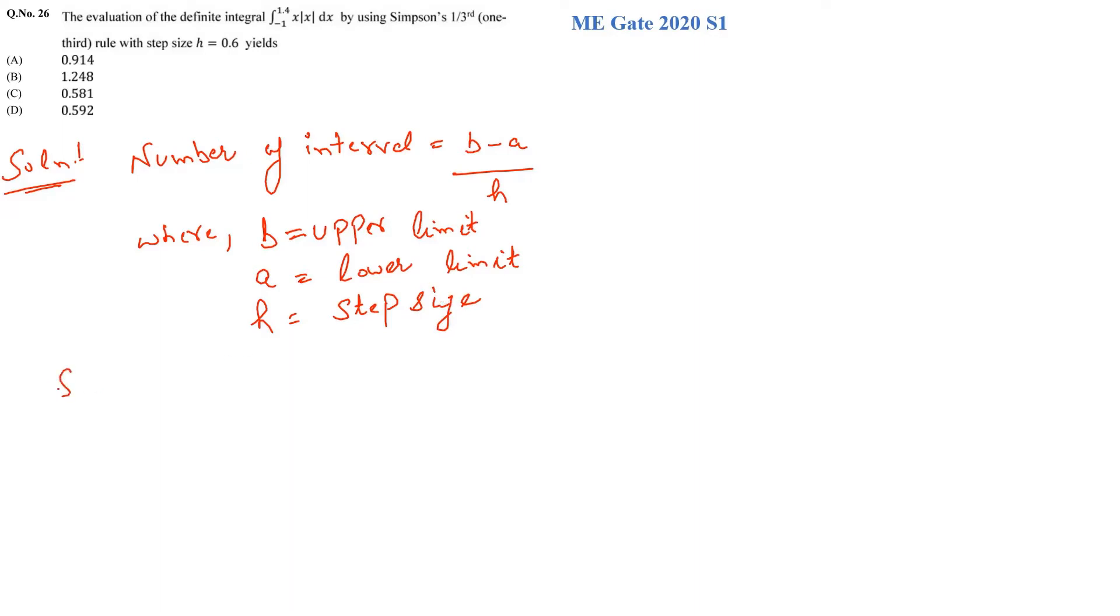Now what does the Simpson's one-by-third rule? I will write the formula here. Lower limit to higher limit function of x dx equals to h by 3.